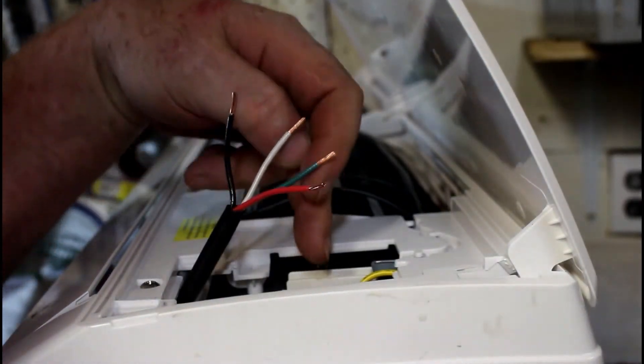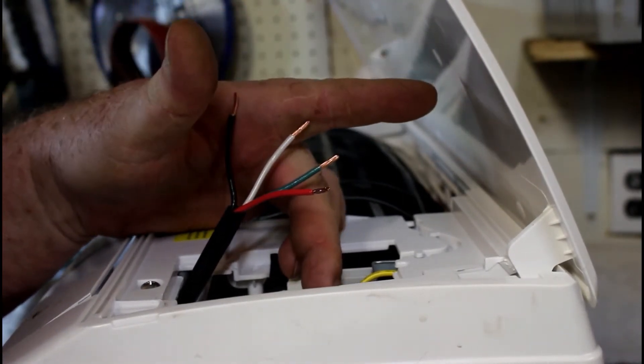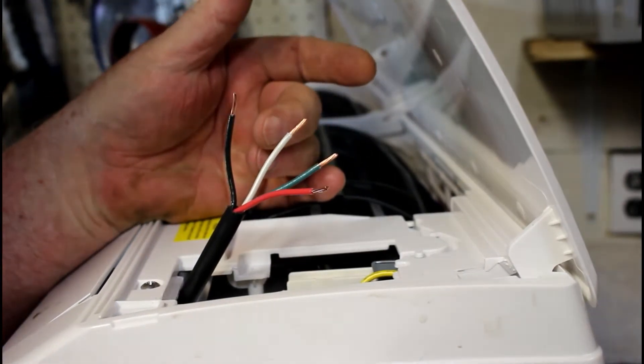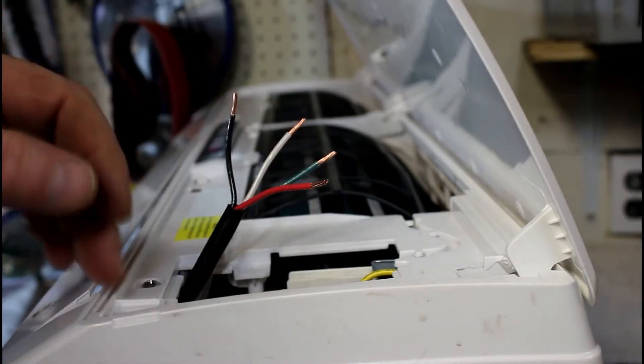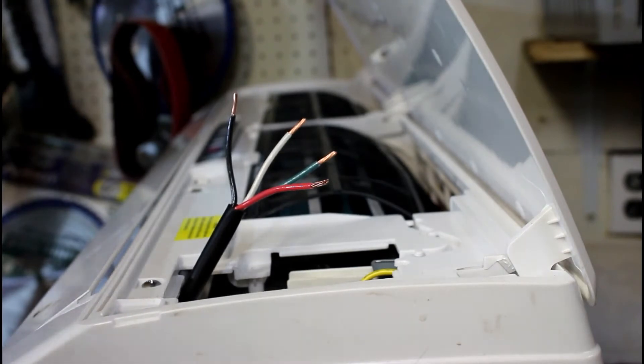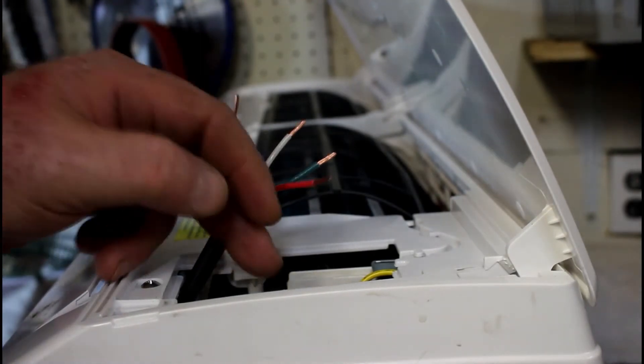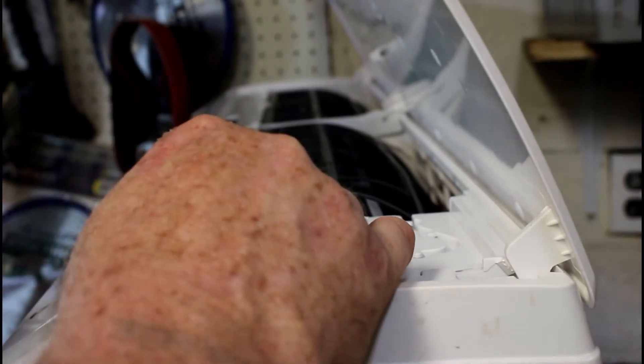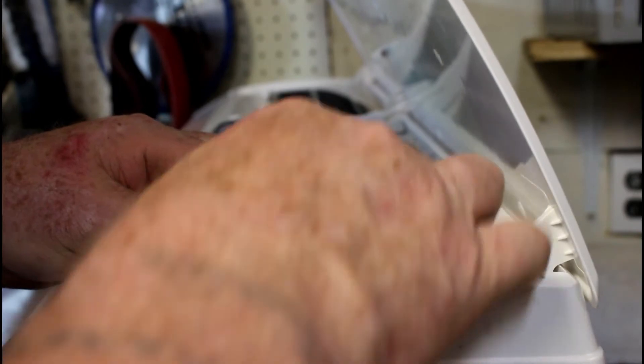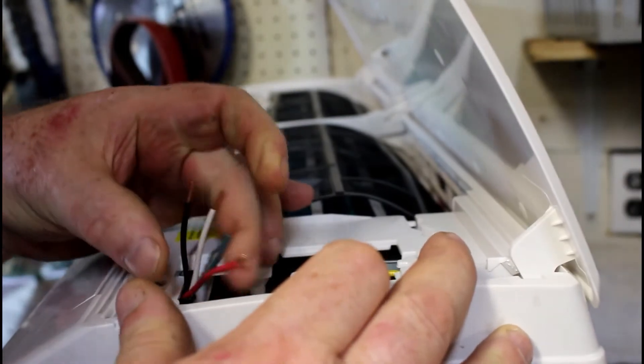So, one is black, white is two, three is red, and green is what they're calling ground or neutral. So that's how this is going to work, the control for this whole unit. Now because this looks like it's going to be easy to get to and it's indoors, I'm not going to concern myself too much with tinning the wires.